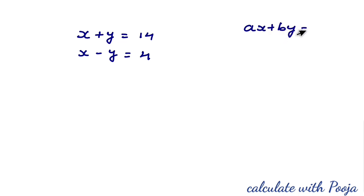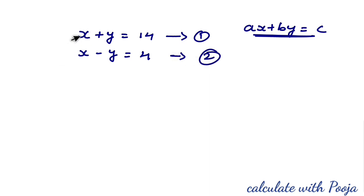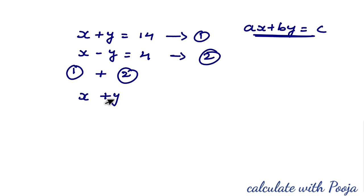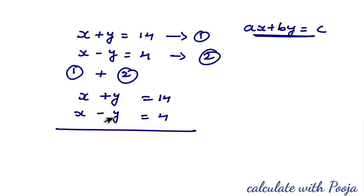For elimination method, we check the form ax + by = c — LHS variables and RHS constant. The equations are already arranged. We look at the coefficients: since y has +1 and −1, we can directly cancel. Adding equation 1 and equation 2: x + y = 14 plus x − y = 4. The y terms cancel, giving 2x = 18.